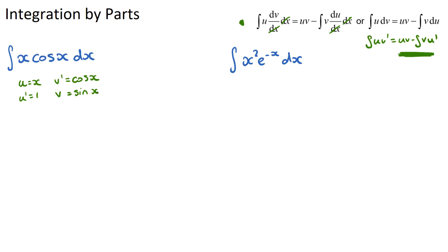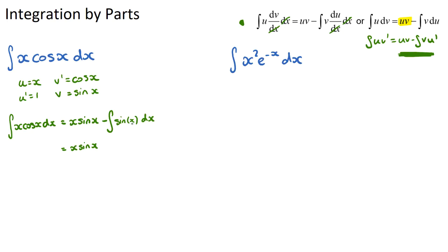For the first question, let u = x so that u' = 1, a constant. Then v' = cos x, and v = sin x (the integral of cos x). Rewriting: the integral of x·cos x dx equals u·v, which is x·sin x, minus the integral of v·u', which is sin x times 1. That gives x·sin x minus the integral of sin x dx. The integral of sin x is −cos x, and with the minus sign already present, we get x·sin x + cos x + c.